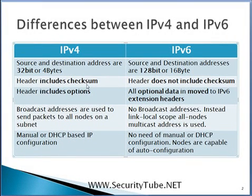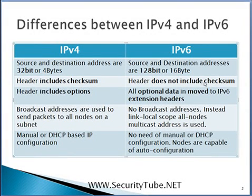Another difference in the IPv6 header compared to IPv4 is the checksum. The IPv4 header contained a checksum, but the IPv6 header does not contain any checksum. It was found that the IP layer checksum was not playing a very important role in packet routing, so the IPv6 checksum has been removed. The TCP and UDP checksums will still be present and they are mandatory.